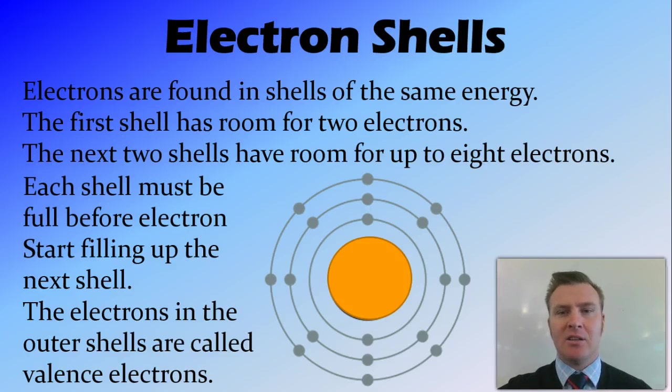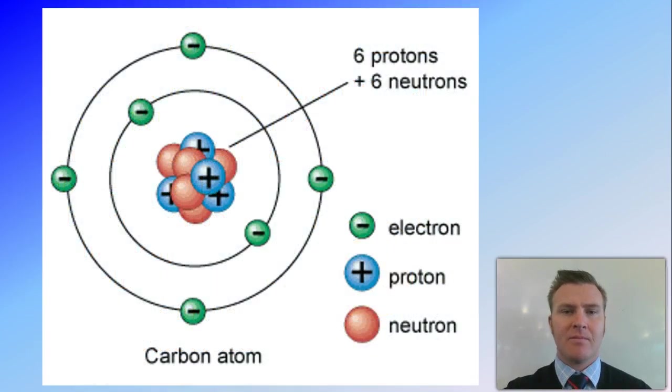And the electrons in the outer shell are referred to as valence electrons. So going back to our carbon, we have our six protons and six neutrons, both found in the nucleus. We then have six electrons orbiting that. And the first shell is capable of holding two electrons. So two of those six will go into the first shell. We then have four electrons left over, and those four electrons will take up positions in the second shell.